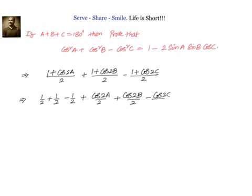Now let us take 1 by 2 common. We will have 1 by 2, and 1 by 2 cancel. We will have 1 by 2 plus half into bracket. We will have cos 2A plus cos 2B minus cos 2C.